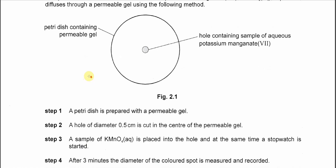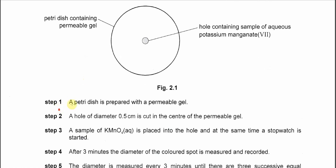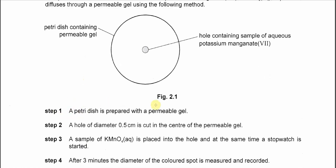For this one, first we need to prepare the setup in Figure 2.1, which is the petri dish with the permeable gel. After that, cut a hole in the center and pour the KMnO4 solution into it. After that, because KMnO4 is purple color, this solution will diffuse in all directions and we need to measure the diameter.